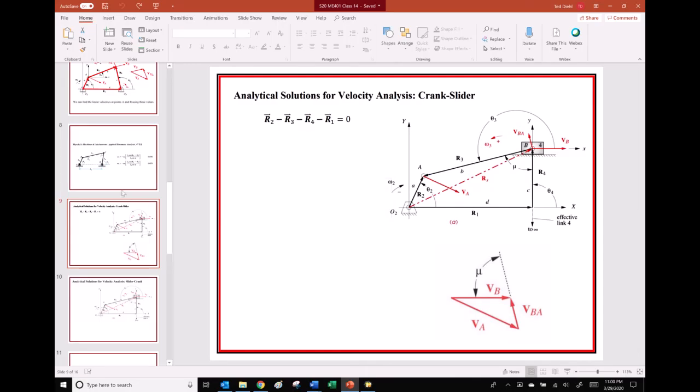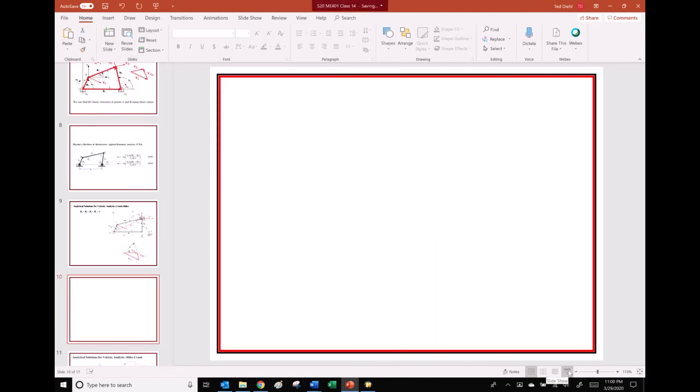Now if we were going to solve this thing that we had previously written as a*omega2*j*e^(j*theta2) minus b*omega3*j*e^(j*theta3) minus d dot, there's going to be two unknowns. Usually we're going to have omega2 as the input, and then what we want to find is omega3 and d dot.